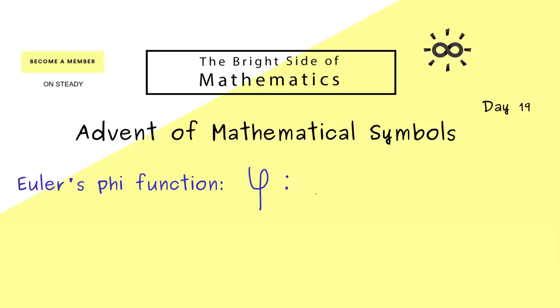The domain of the function is given by the positive integers, so we have the natural numbers n starting with 1. And the codomain is also given by the natural numbers.